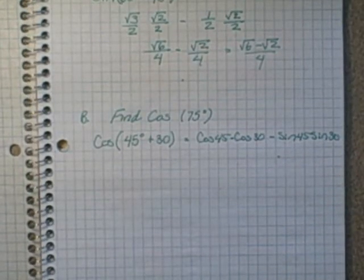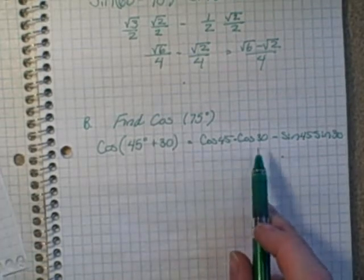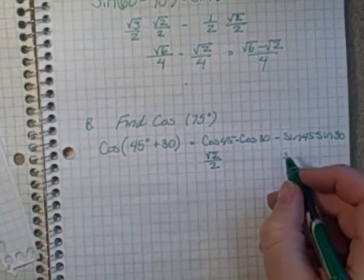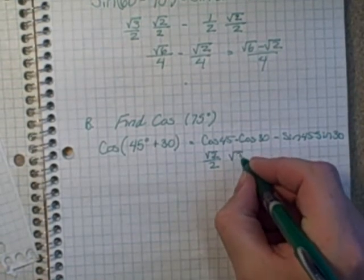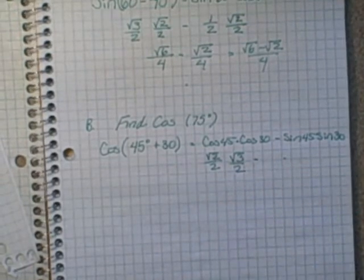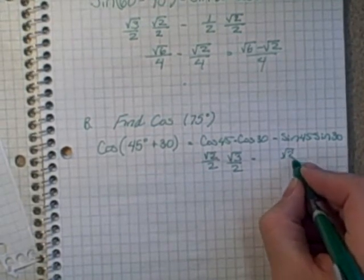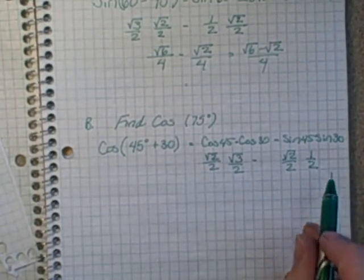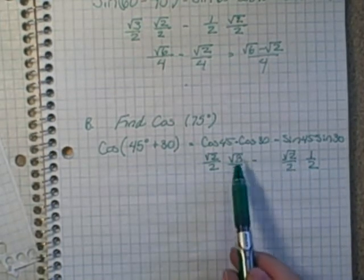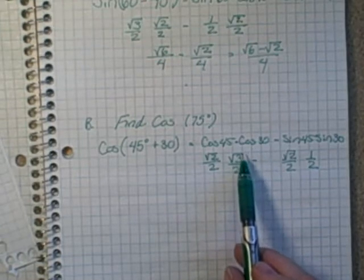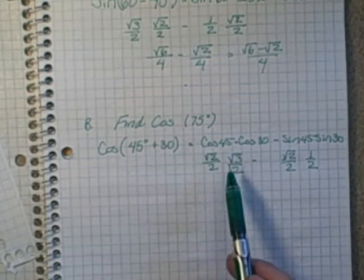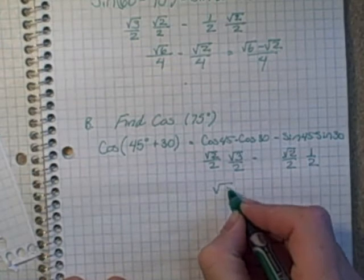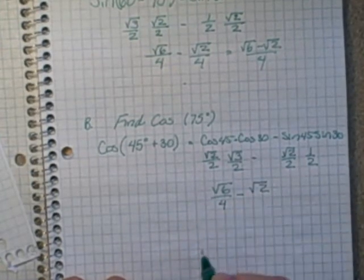We go back to our table from the special triangles and look up what cos(45°) and cos(30°) are and plug them in. Cos(45°) from our table is √2/2, and cos(30°) is √3/2, subtracting sin(45°), which is √2/2, and sin(30°), which is 1/2. This ends up being √6/4 subtracting √2/4, which gives us (√6 - √2)/4, the same answer we had last time.